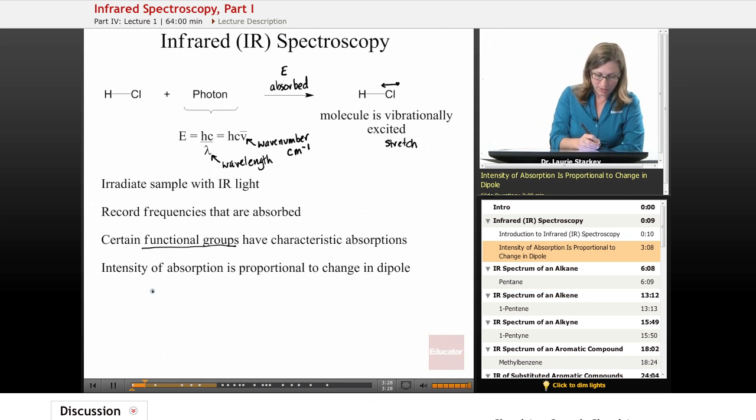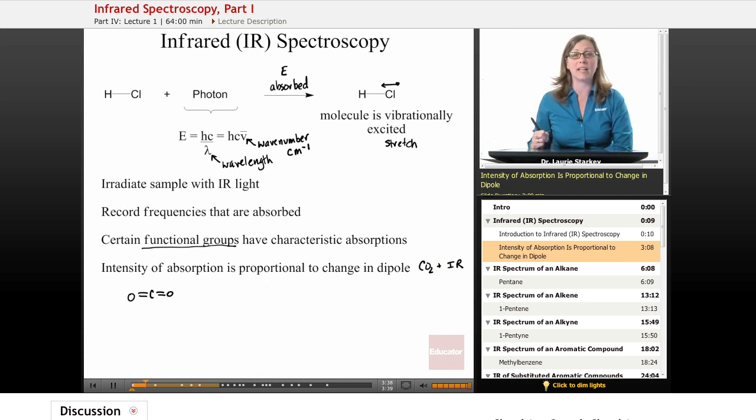So for example, let's take a look at a molecule, a more complicated molecule, like carbon dioxide. If we take CO2 and we irradiate it with infrared light, what can happen? How can this molecule become vibrationally excited?